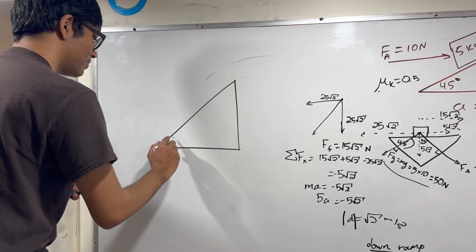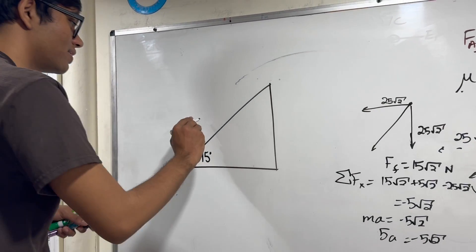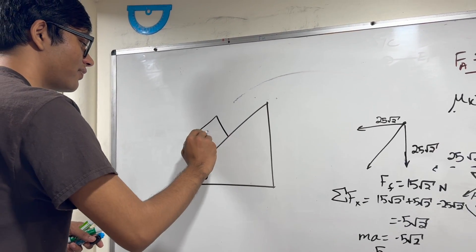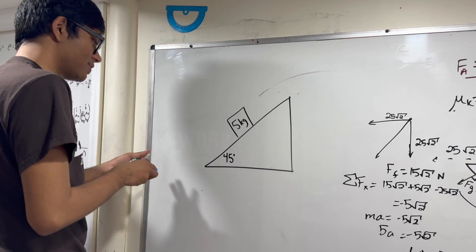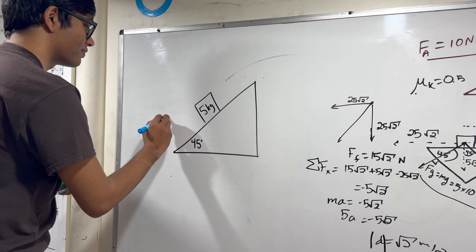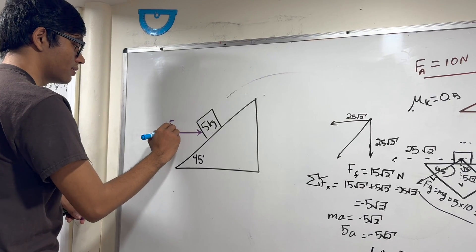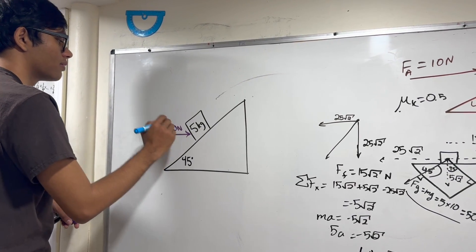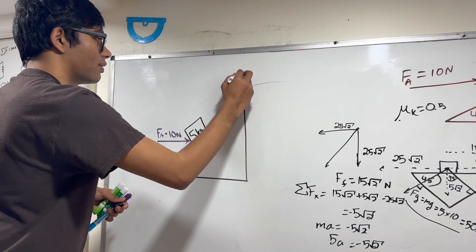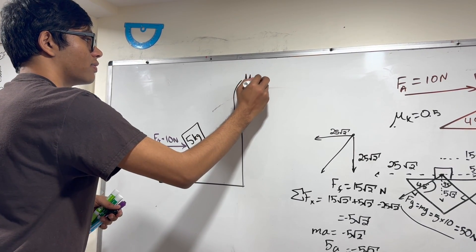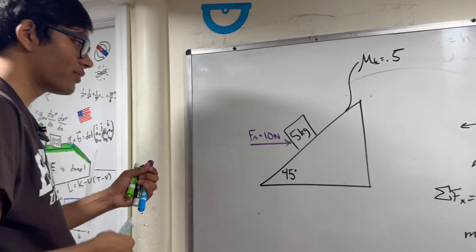Here is our inclined plane, 45 degrees. Here is our box, 5 kilograms. And here is our applied force. Our applied force is horizontal and it's 10 newtons. Mu K is 0.5. So let's decompose the forces.